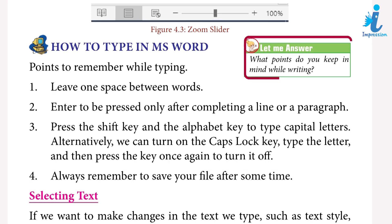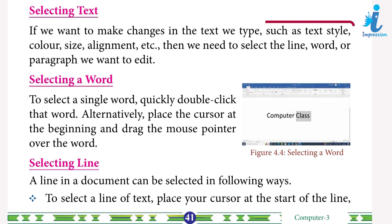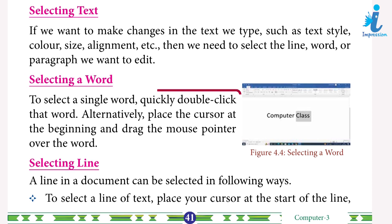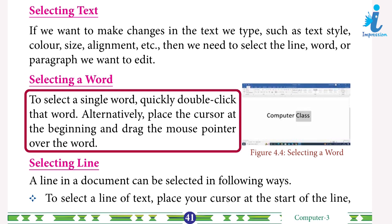Selecting text: if we want to make changes to text such as text style, color, size, or alignment, we need to select the line, word, or paragraph we want to edit. Selecting a word: to select a single word quickly, double-click that word. Alternatively, place the cursor at the beginning and drag the mouse pointer over the word.